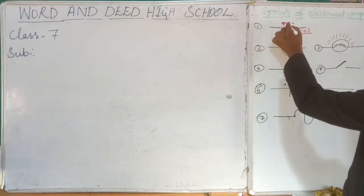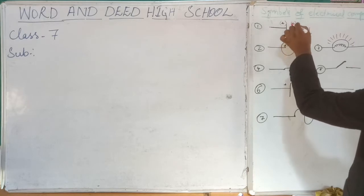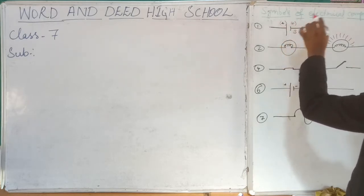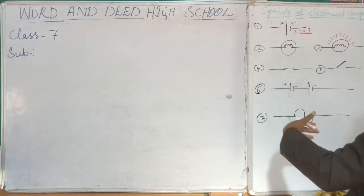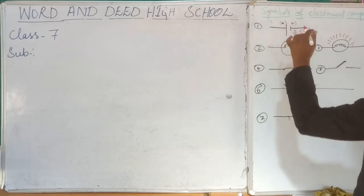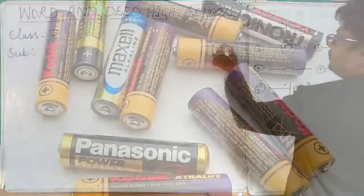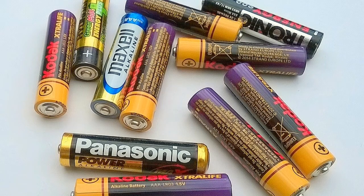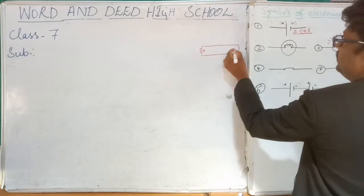In the cell symbol, the long standing line represents the positive terminal and the short standing line represents the negative terminal. If you take a battery cell from a TV remote, you will see these symbols on either side. Let me draw the diagram — on either side you can see this is positive and this is negative.